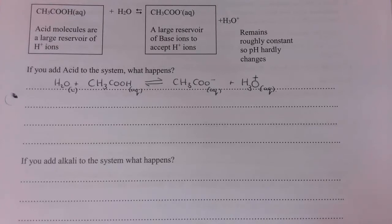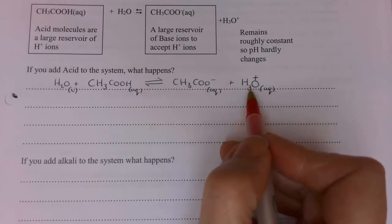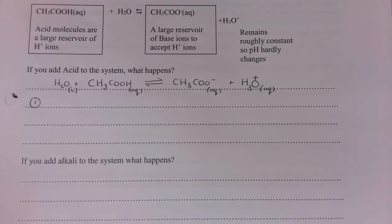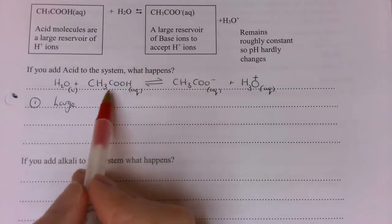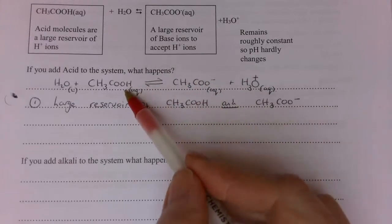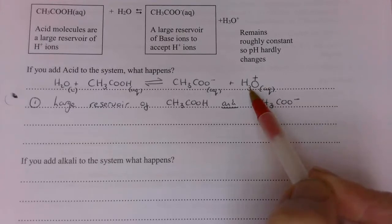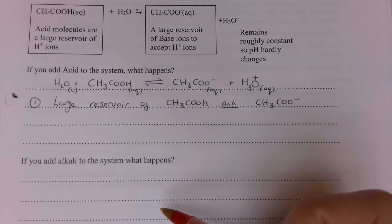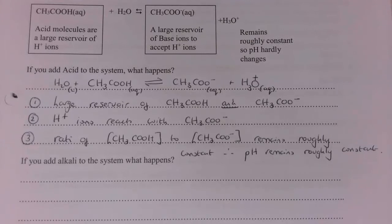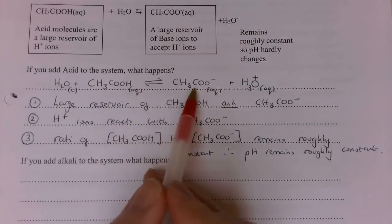Now we want to consider what happens when we add acid — in other words, when we increase the hydrogen ion concentration. Because this is a weak acid and I've added excess salt, I have a large reservoir of both the undissociated acid and the salt. Because of this large reservoir, when I add a little extra hydrogen ions the equilibrium position can shift backwards to absorb them. But because of the large reservoir, the ratio of the two does not change, and therefore the concentration of hydrogen ions remains roughly constant. Those are the three things to explain how a buffer reacts with acid and keeps the pH roughly constant.